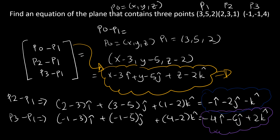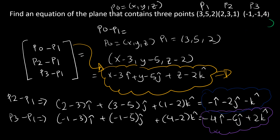Now we have our second and third rows as well. To recap: P2 was 2, 3, 1 and P1 was 3, 5, 2, giving 2−3, 3−5, 1−2. P3 was −1, −1, 4 and we subtracted P1 (3, 5, 2), giving −1−3, −1−5, 4−2, which gives us these vectors. Now let's set up the matrix.